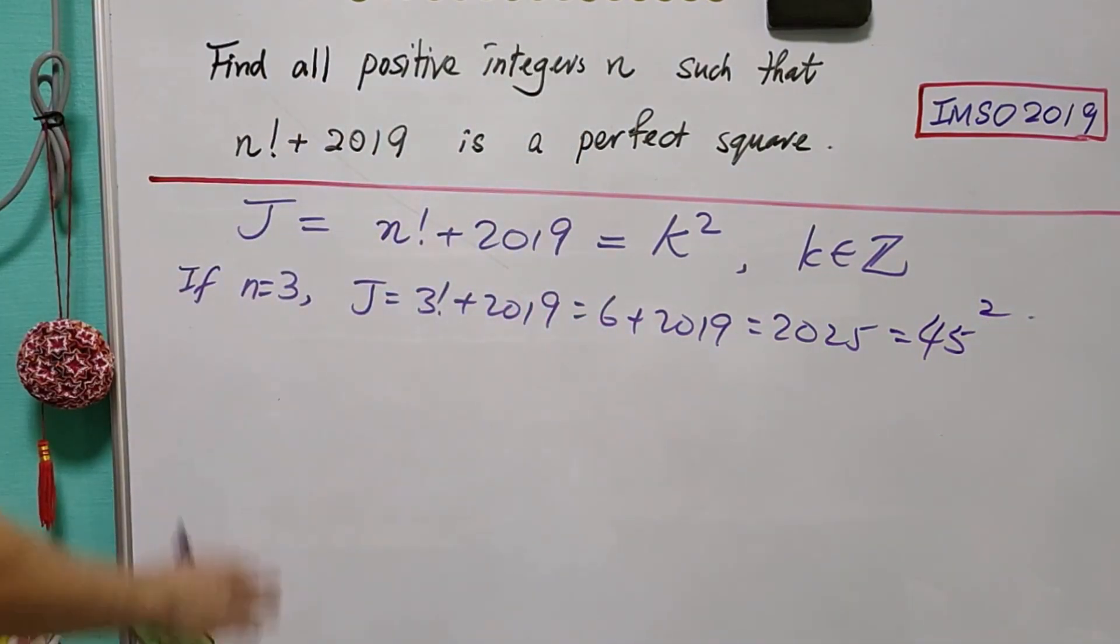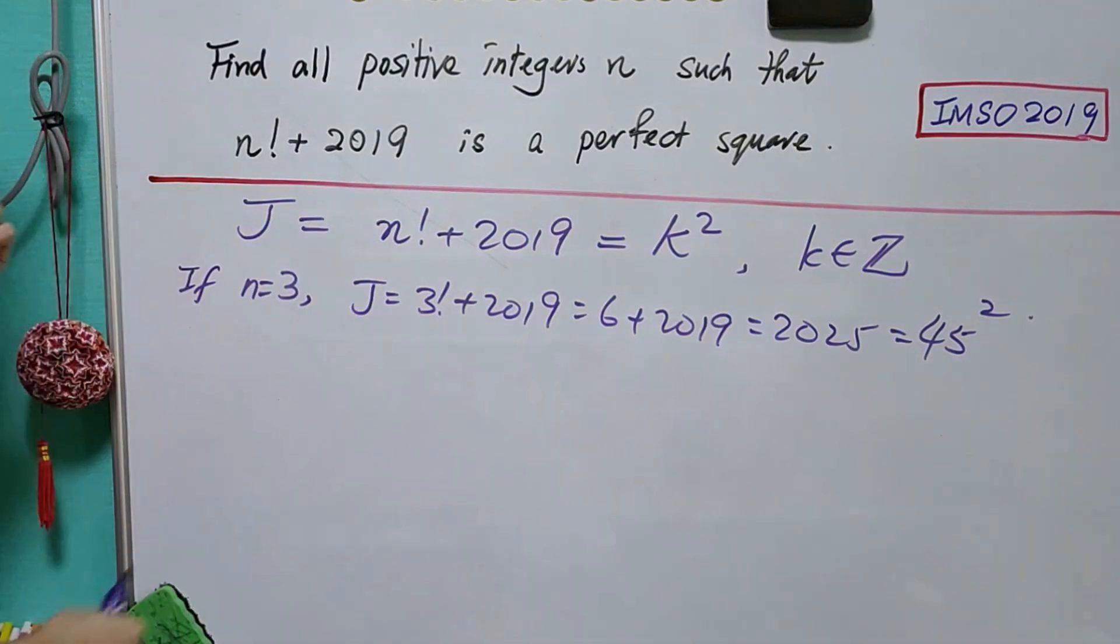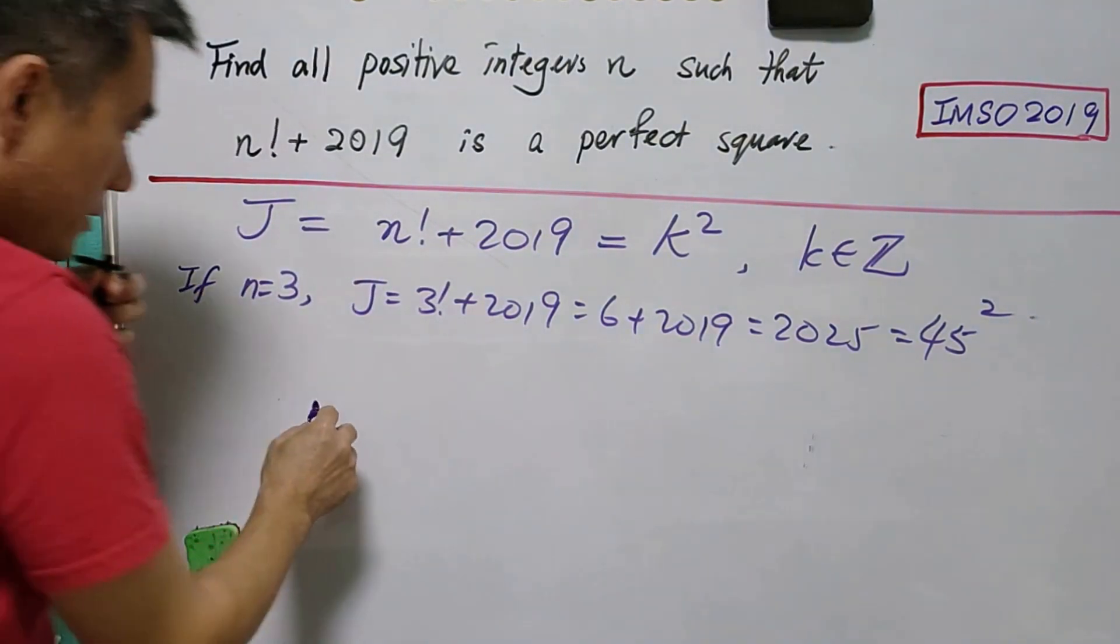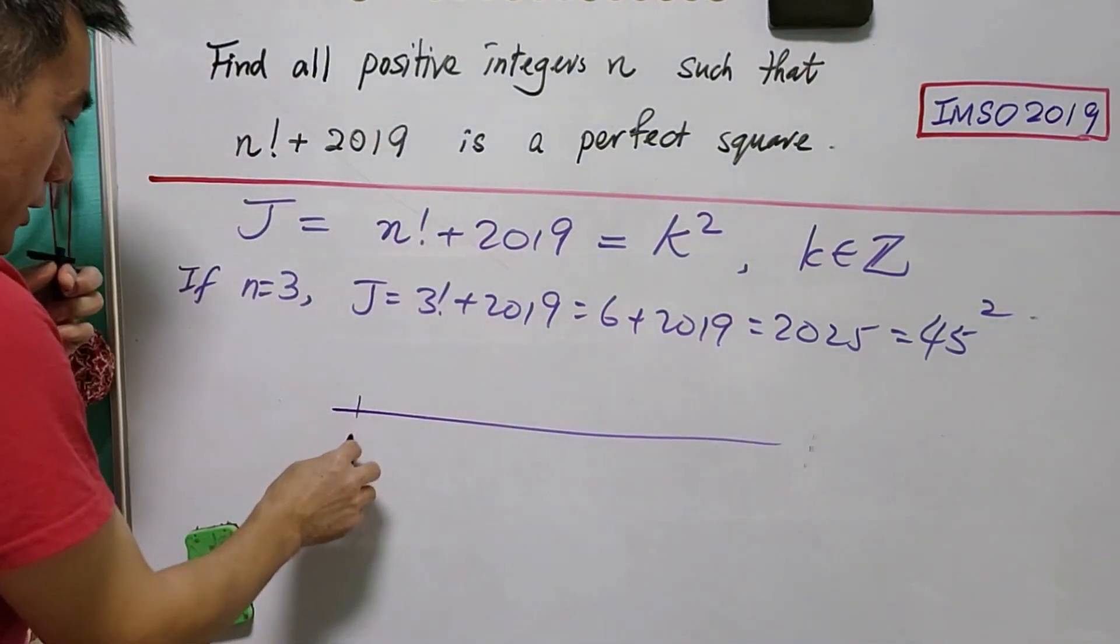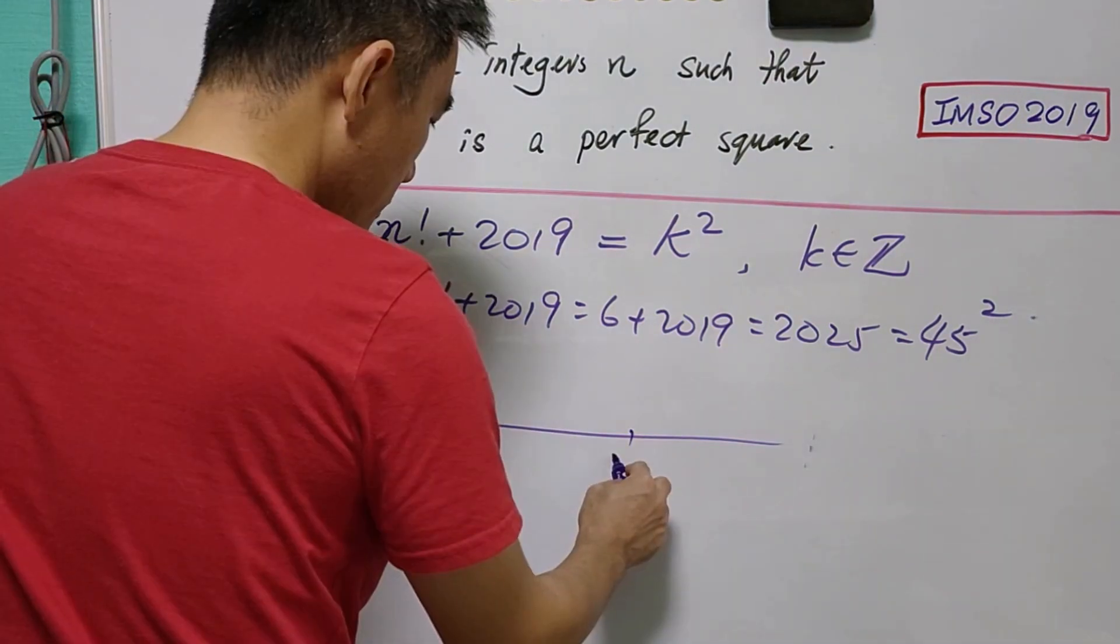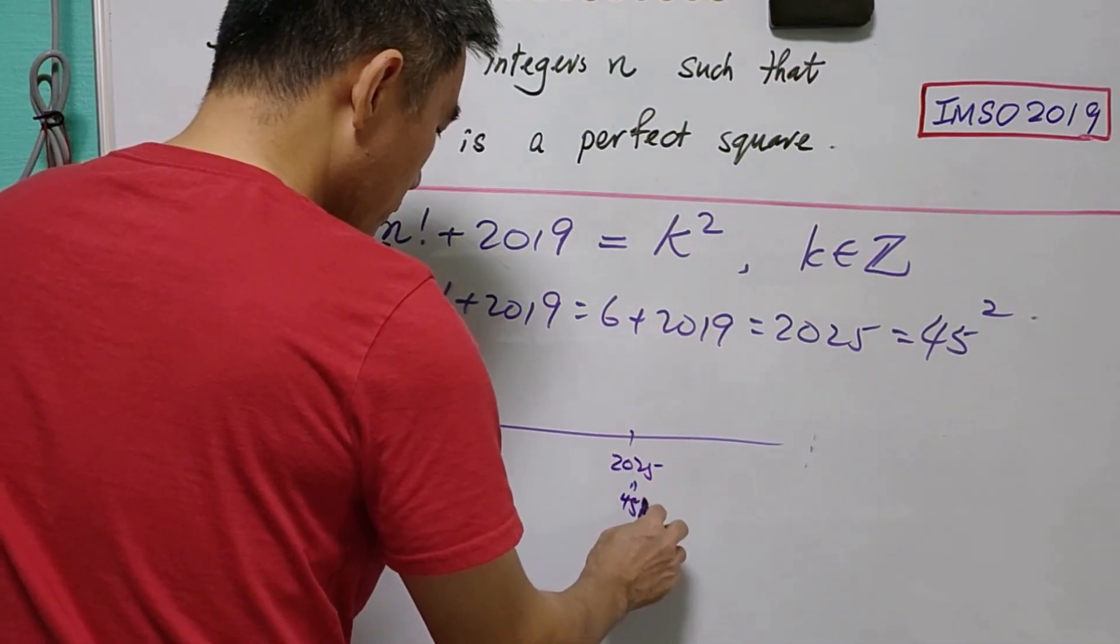So when n = 3, this number is a perfect square. This is a number line, where this is 0 and this is 2025, equal to 45².